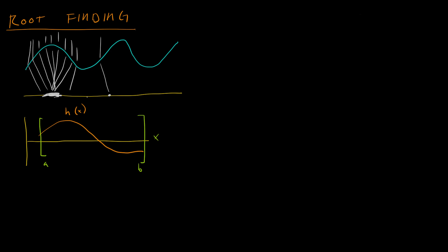We can take the caustics problem and transform it into a root finding problem by asking: what position of incoming light strikes this surface? We arrange our formulas such that when the incoming light strikes the surface, our formula equals zero. There are a lot of problems that can be turned into root finding problems. I'm not going to get into how to transform this one right now — for now let's learn a root finding technique.